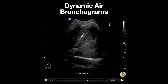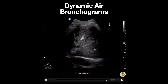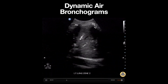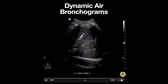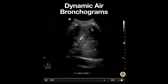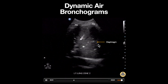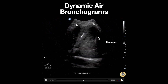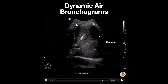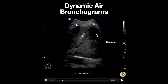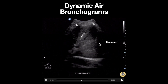Let's look at some important anatomy from superficial to deep. At the top of the screen we can identify two ribs seen here with associated shadowing. We can also see a hyperechoic line moving in and out underneath this rib shadow, which is consistent with the diaphragm.